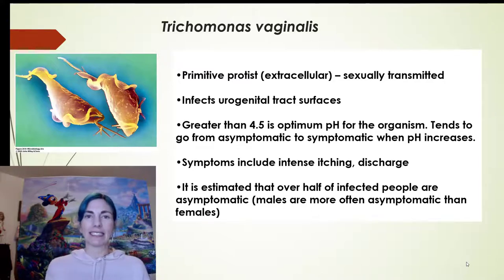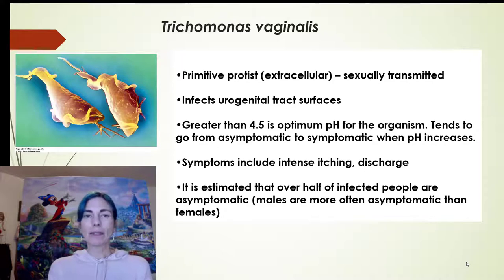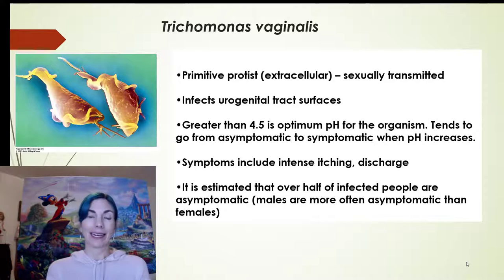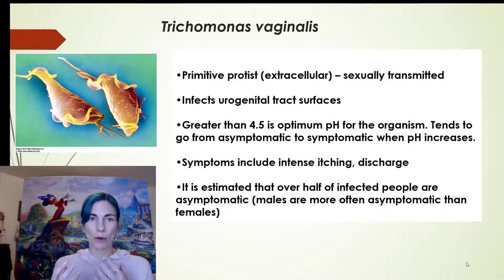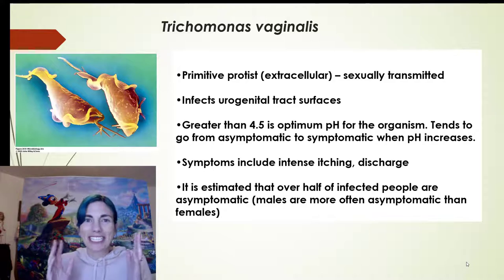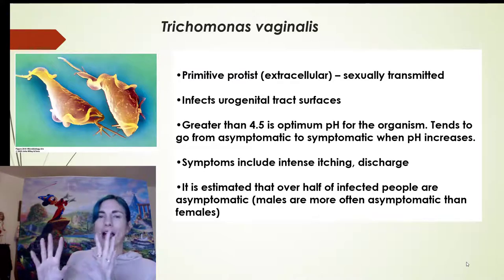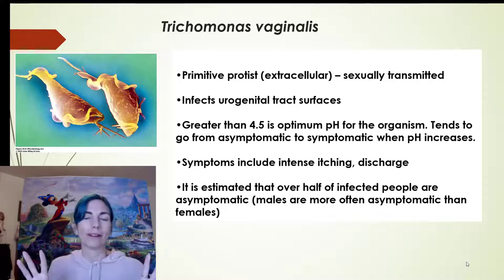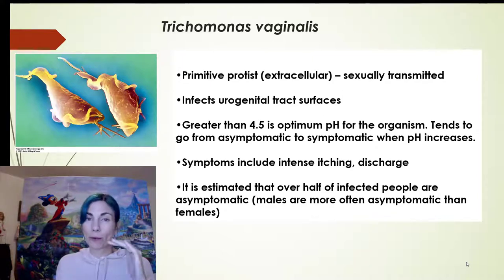Trichomonas vaginalis is a simple organism with only one life stage because it is sexually transmitted. We know from bacterial species that are sexually transmitted that they go right from one human to another with almost no time outside the host, and they tend to be delicate. Similarly, Trichomonas vaginalis has a body form adapted to the human environment — 37 degrees, warm and moist — and it doesn't need to spend any time outside in the cold, harsh world, so it doesn't need another form.